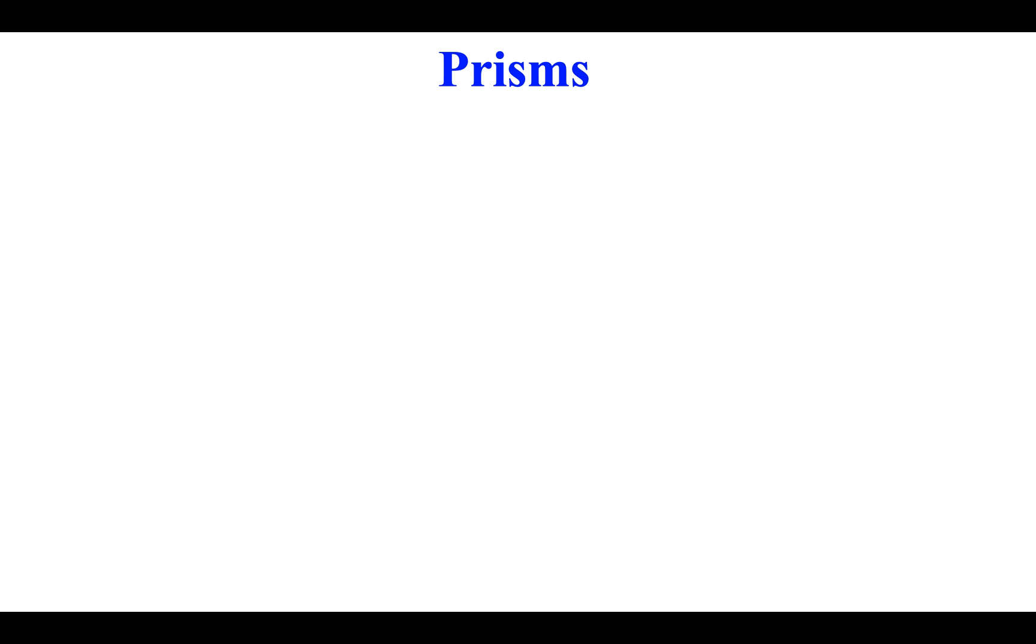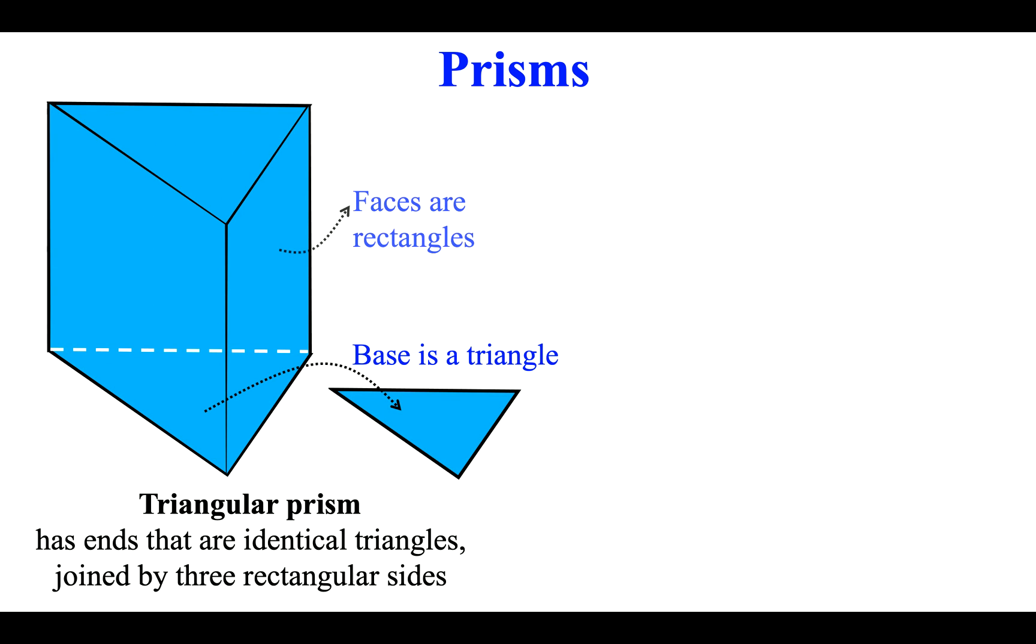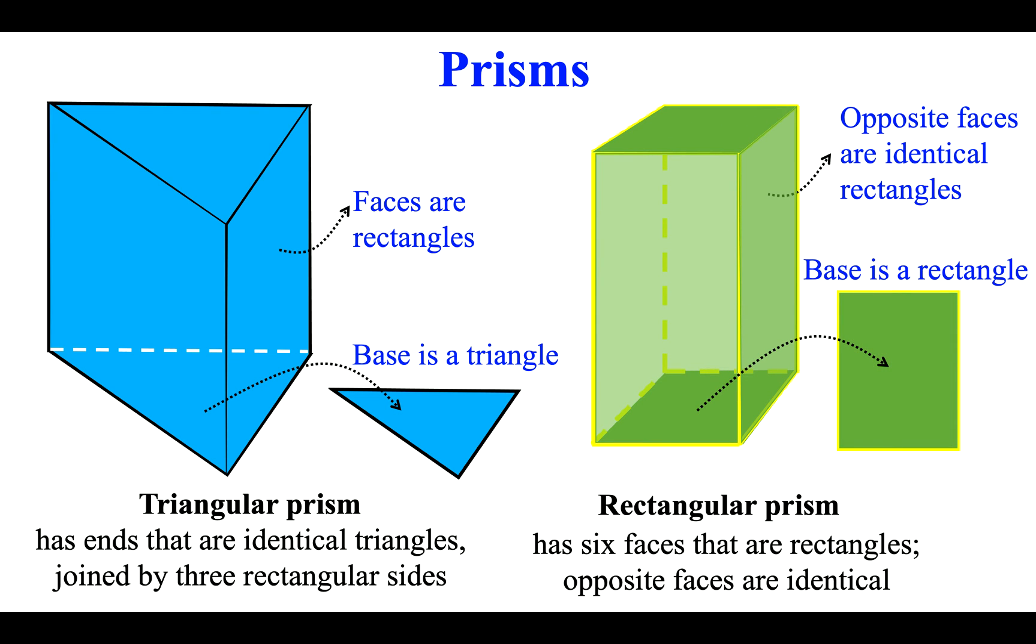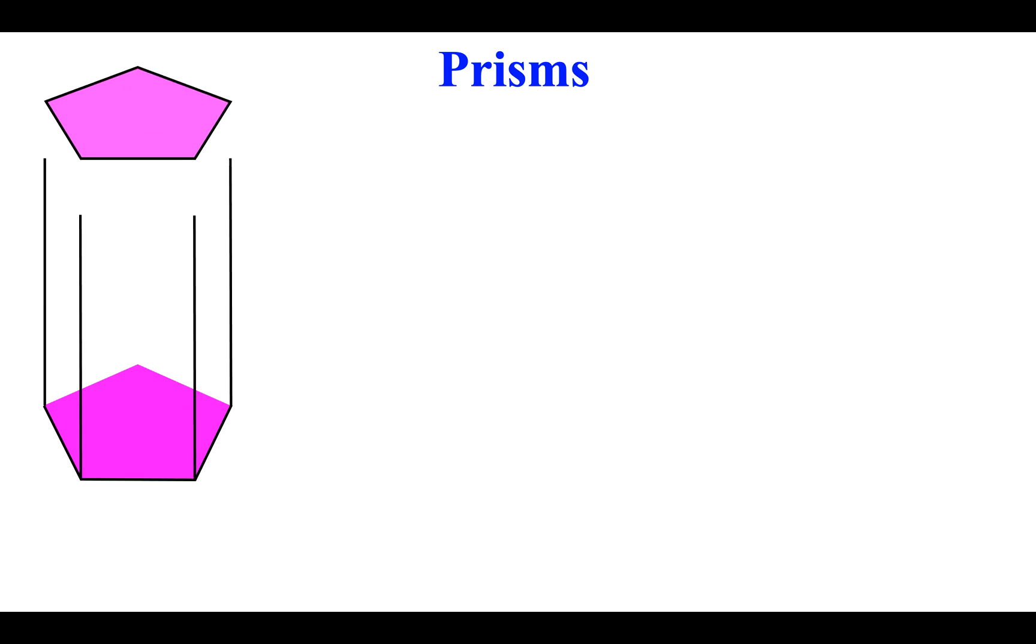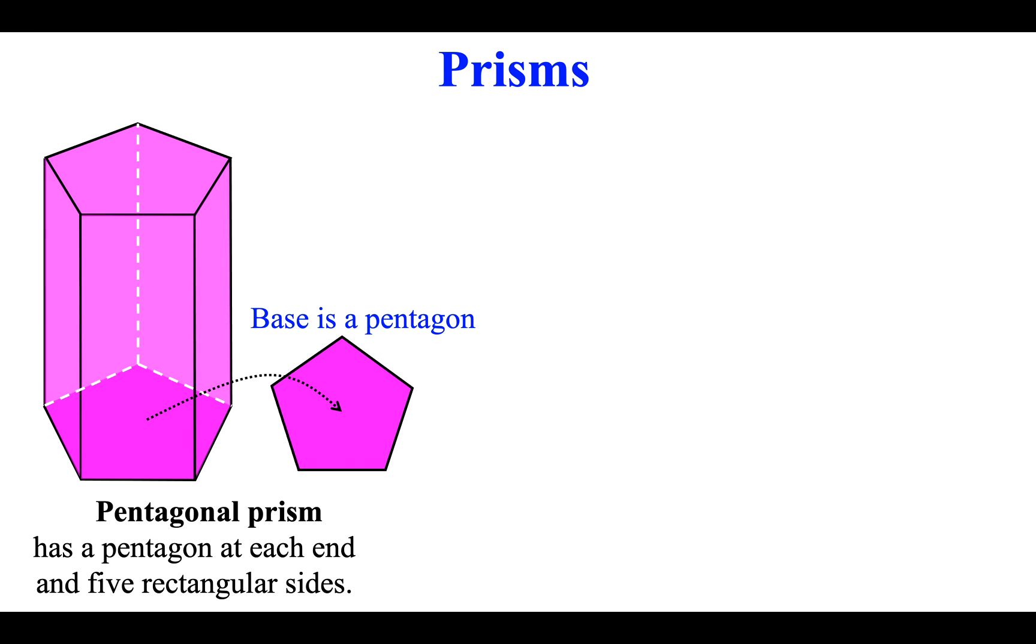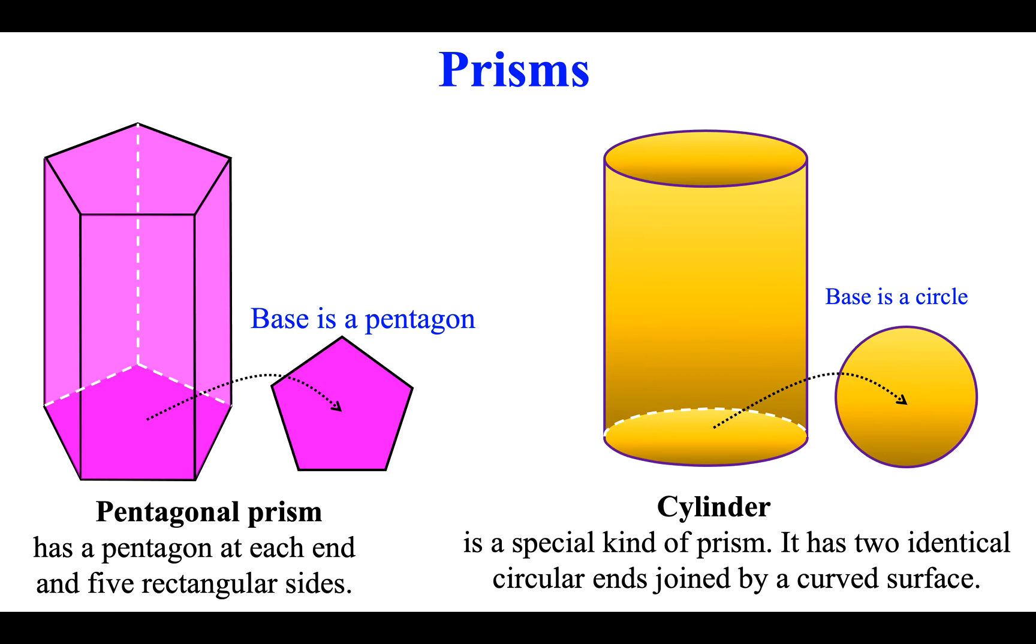Prisms: Triangular prism has ends that are identical triangles joined by three rectangular sides. Rectangular prism has six faces that are rectangles. Opposite faces are identical. Pentagonal prism has a pentagon at each end and five rectangular sides. Cylinder is a special kind of prism. It has two identical circular ends joined by a curved surface.